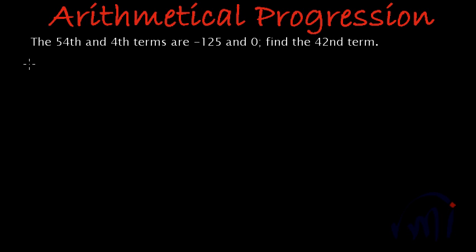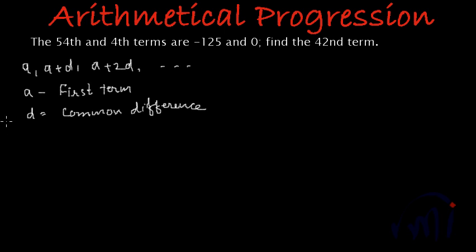So any arithmetic progression can be written as a, a plus d, a plus 2d and so on. Where a is the first term, d is the common difference and any term tn can be written as a plus (n-1) multiplied by d.